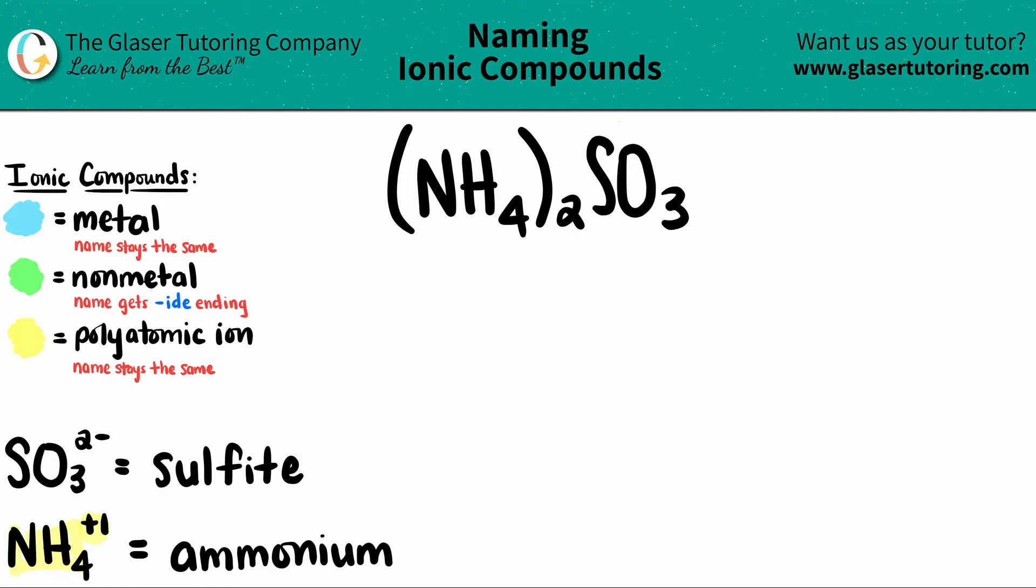NH4, which is always a plus one charge, is always called ammonium. So here's the NH4. I know that I have this polyatomic. I just have two of them, but that doesn't matter.